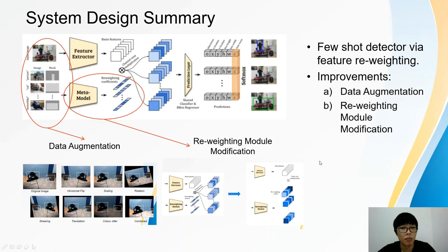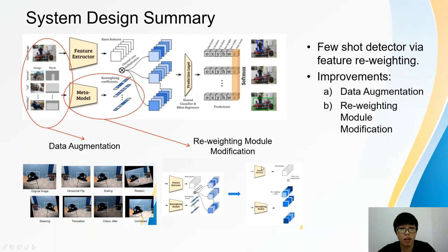In summary, a few-shot detector where feature reweighting is implemented and enhanced for video surveillance. The improvements are done by adding a data augmentation pipeline before phase 2 training to diversify the annotated images, and modifications of the reweighting modules to prevent excessive class-specific information loss.